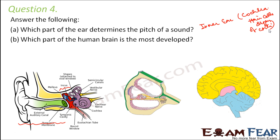Which part of the human brain is the most developed? Humans have the best ability to think, and thinking is concentrated in the cerebrum. So cerebrum is the most developed part of the human brain.